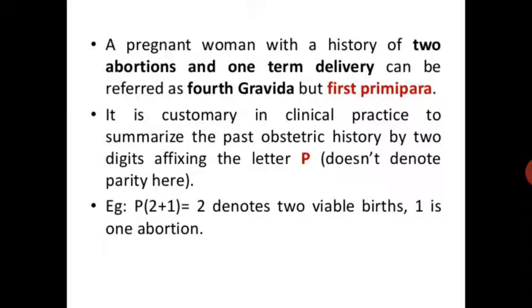Example: P is 2+1 — where 2 denotes 2 viable births and 1 is 1 abortion.